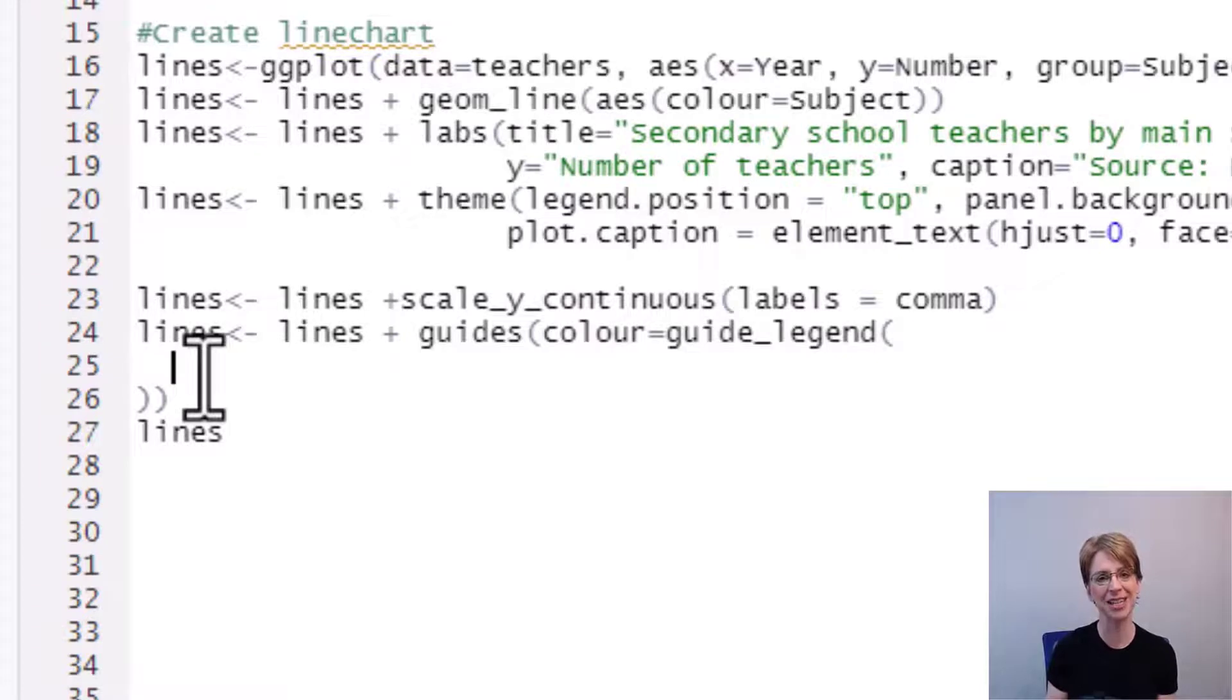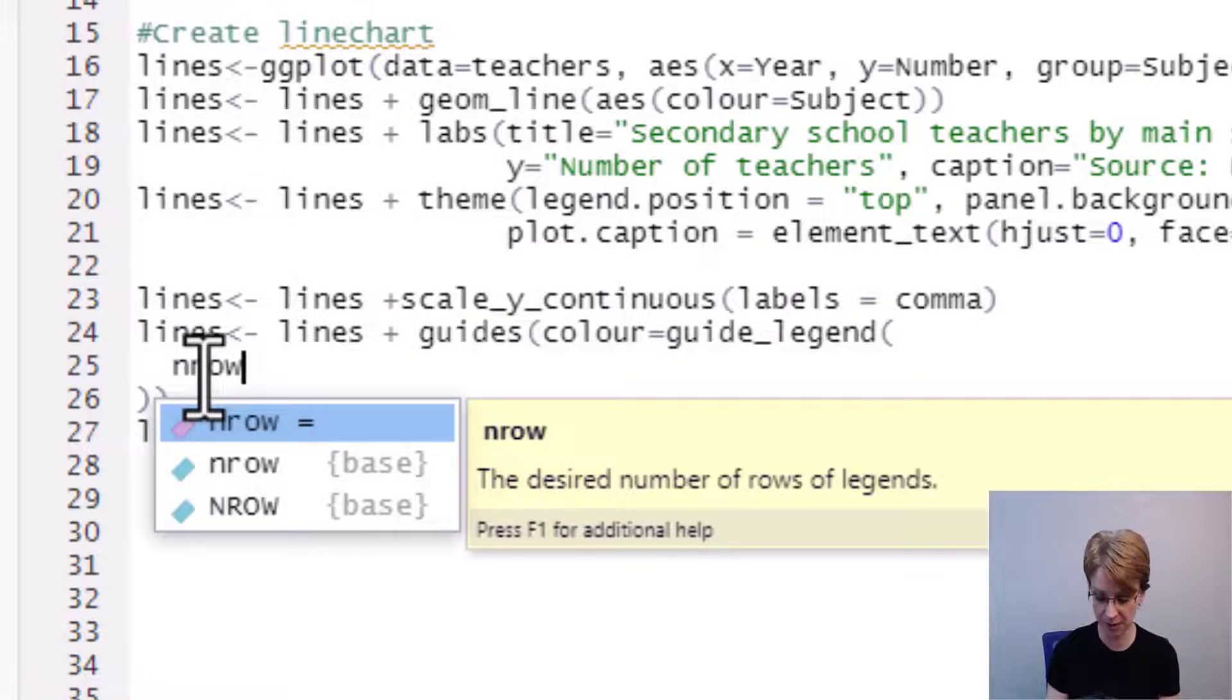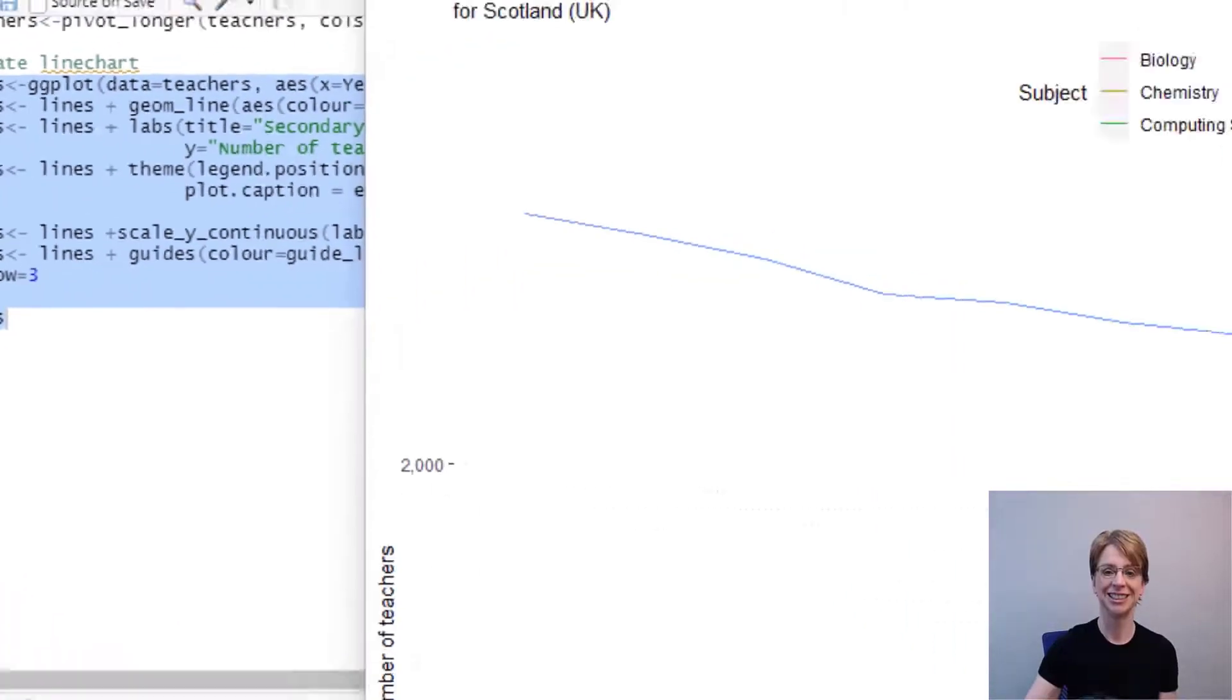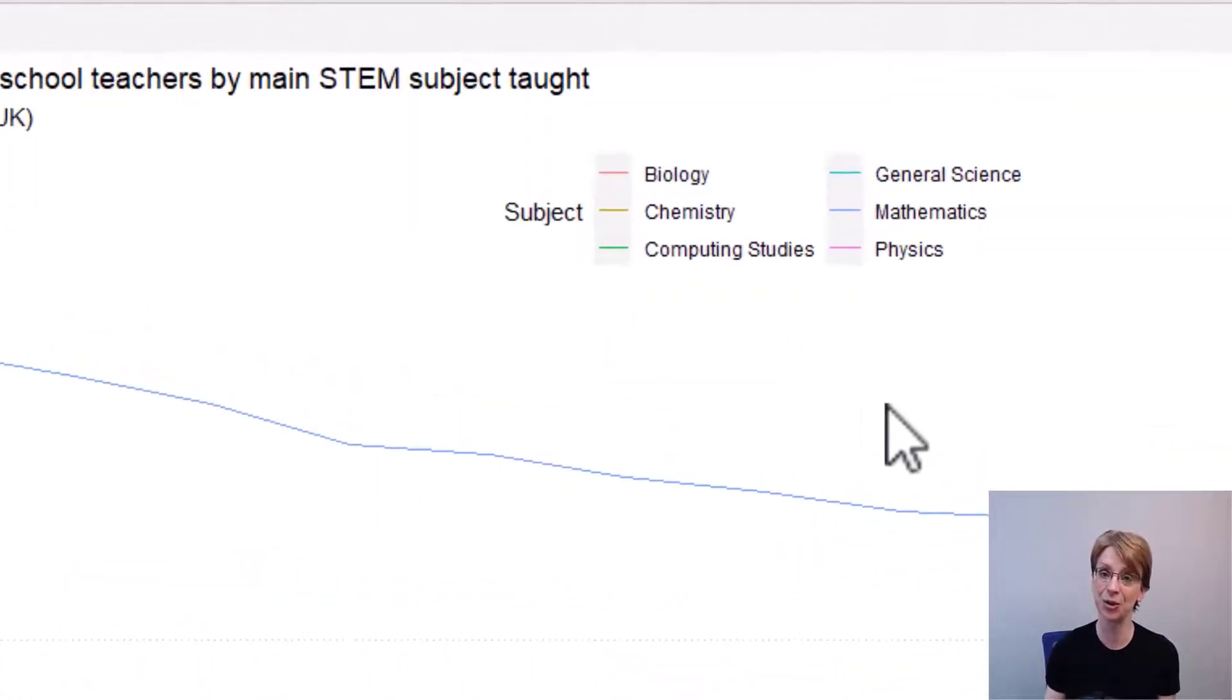In the legend you can specify the number of rows over which you would like the legend to be spread so for example if I put in nrow equals 3 and run the code you can see the legend now has 3 rows.